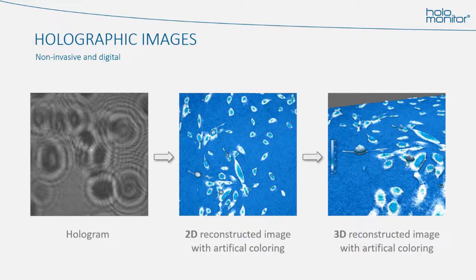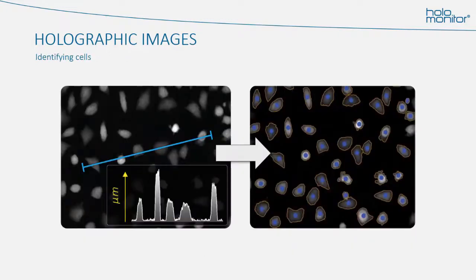The colors in the images represent the thickness of the cells. In these two images here, we have set the background to blue, the thicker cells to turquoise, and the rounded up cells, which are thickest, become dark grayish-whitish. Once we have the images, the analysis begins with cell identification. As the holographic images contain data about the thickness of the cells, the software can determine what is cell and what is background, and it can set the cell boundaries.